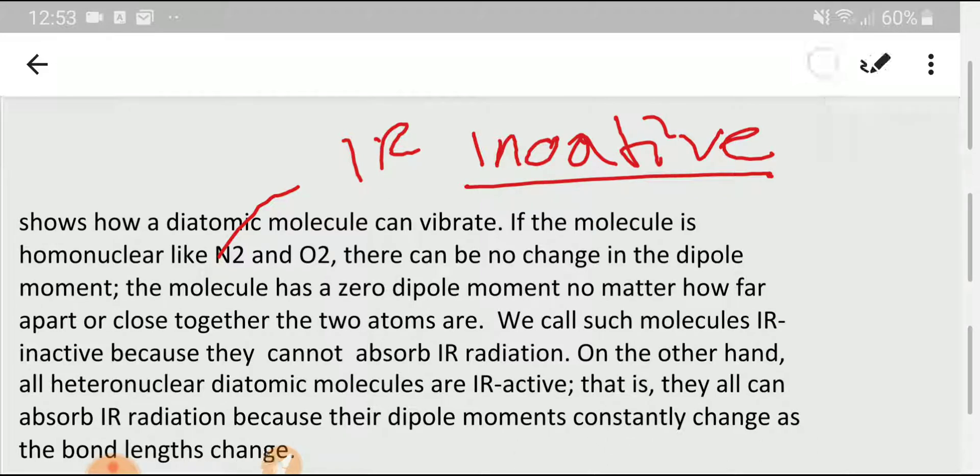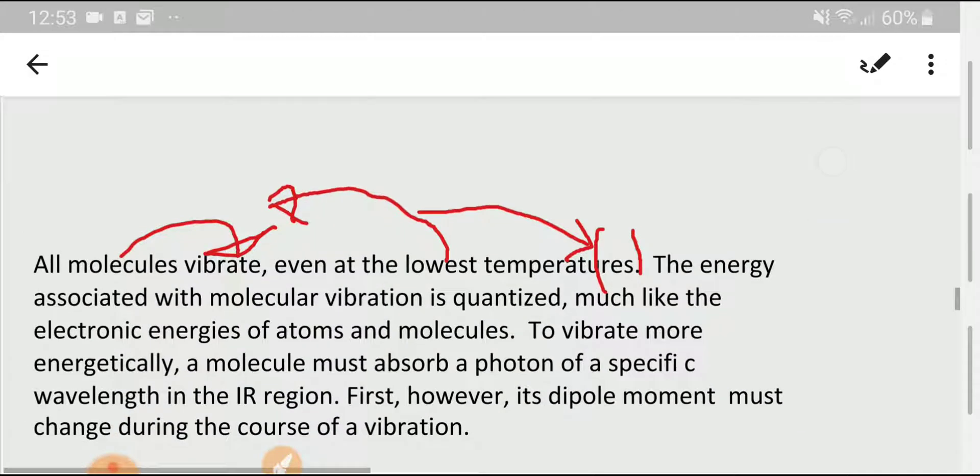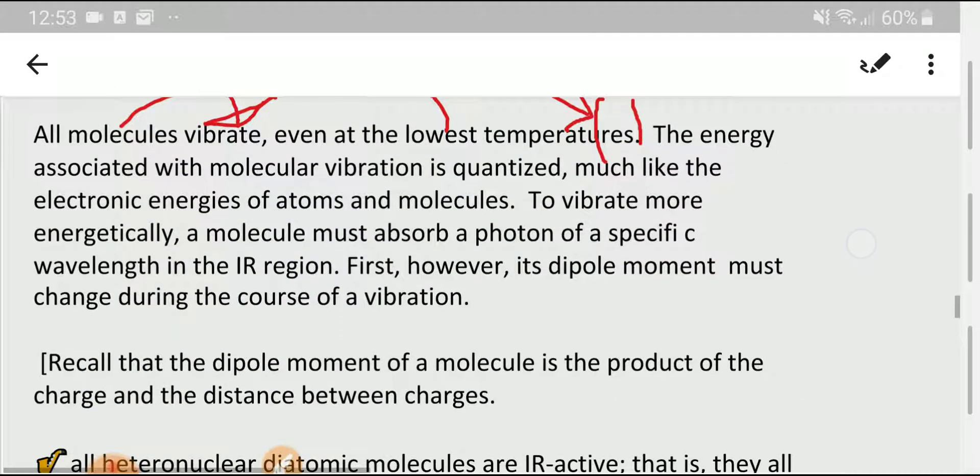That is, they can absorb IR radiation because their dipole moments constantly change as the bond length changes. The dipole moment of a molecule is the product of the charge and the distance between charges. That is, if the bond length changes, then the dipole moment must change.